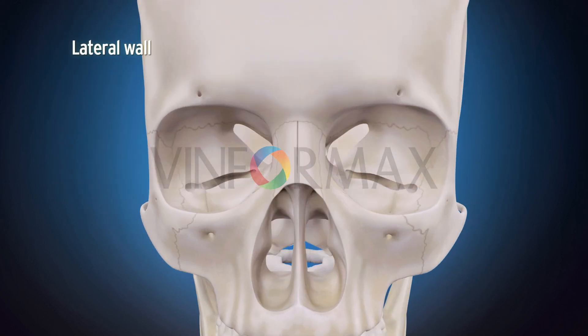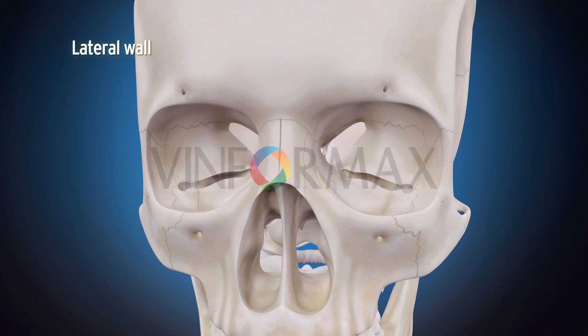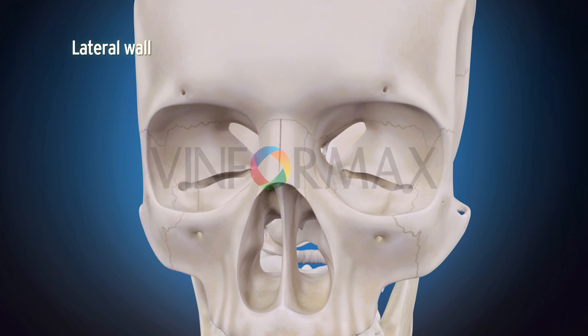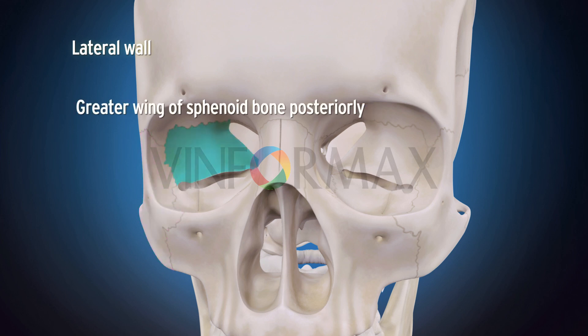The lateral wall is formed by the orbital surface of zygomatic bone anteriorly and the greater wing of sphenoid bone posteriorly.